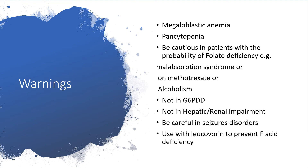Megaloblastic anemia is very possible. Pyrimethamine is a folic acid antagonist, so folate deficiency will lead to megaloblastic anemia. Pancytopenia is also possible. We have to be cautious in patients with a probability of folate deficiency — in cases of malabsorption syndrome, or if the patient is on methotrexate (which is also an antifolate), or if the person is alcoholic — all increasing the risk of folate deficiency leading to megaloblastic anemia.